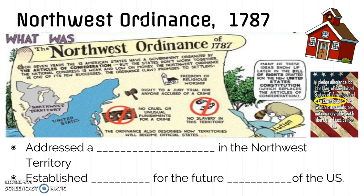So in 1787, the US government addressed a need for government in the Northwest Territory — there had to be some laws about what was happening there. The Northwest Ordinance established laws for the future government of the United States as well. Even though these laws were first made for the Northwest Territory, we see them being extended and used in the Bill of Rights and the Constitution. That's why the Northwest Ordinance is important: it's the first time we see these laws written down in a document, and they go on to influence our larger government, which we still have today.